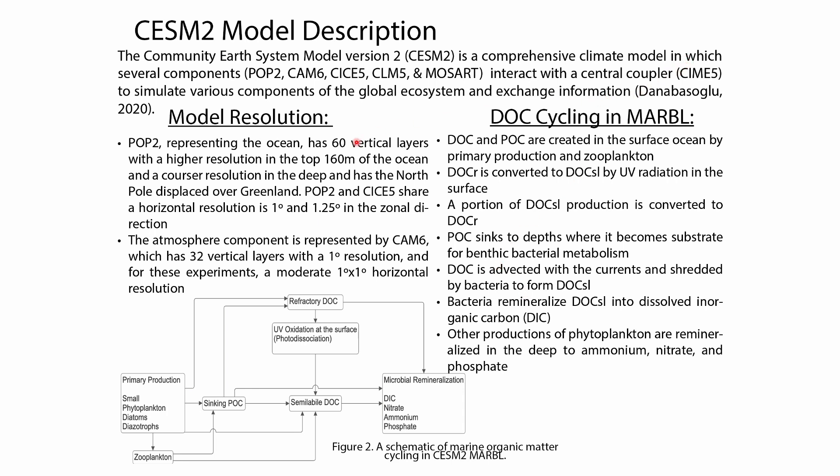The ocean component has 60 vertical layers that are smaller at the top and get bigger as depth increases, and the atmospheric component has 32 vertical layers with a one-degree resolution. For my experiments I will be using a one-degree by one-degree horizontal resolution.